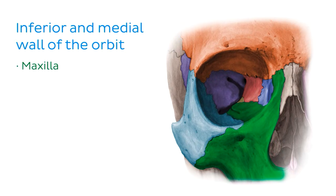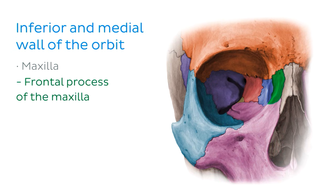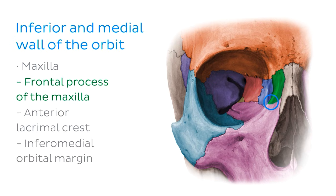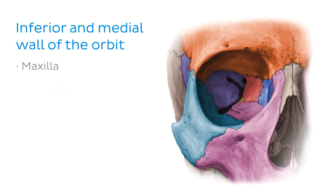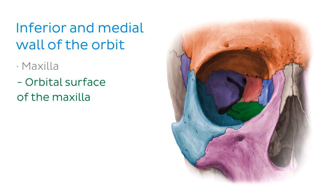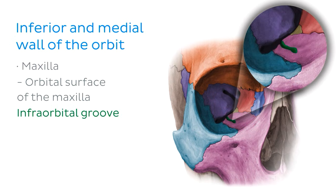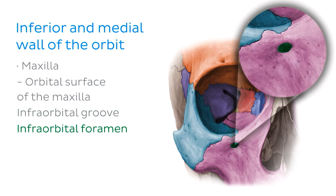We then moved on to the maxilla, which contributes to the medial and inferior orbital margin in addition to the medial part of the floor of the orbit. Important landmarks included the frontal process of the maxilla, which articulates with the frontal bone at the frontomaxillary suture, the anterior lacrimal crest as a landmark of the frontal process, the inferomedial orbital margin, and the orbital surface of the maxilla with its most prominent landmark the infraorbital groove, which gives way to the infraorbital canal and opens at the infraorbital foramen.